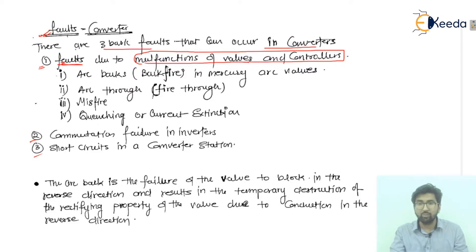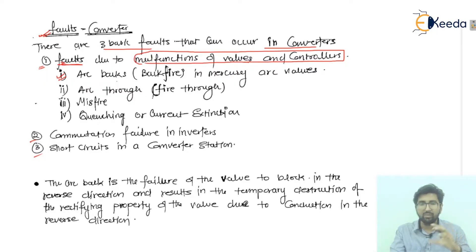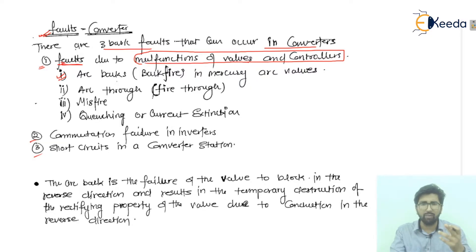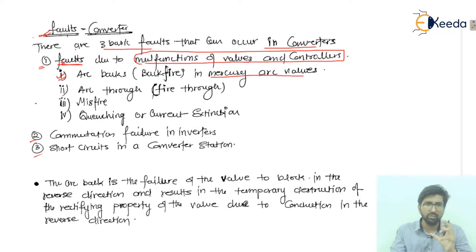The first cause is arc backs. Whenever in reverse bias conditions, arc back is found in the mercury arc valves — that is, in reverse direction operation. Arc back is generally called backfire, and it generally happens in mercury arc valves. But as we advance to modern technology and replace with thyristor valves, arc back does not occur in thyristor valves.